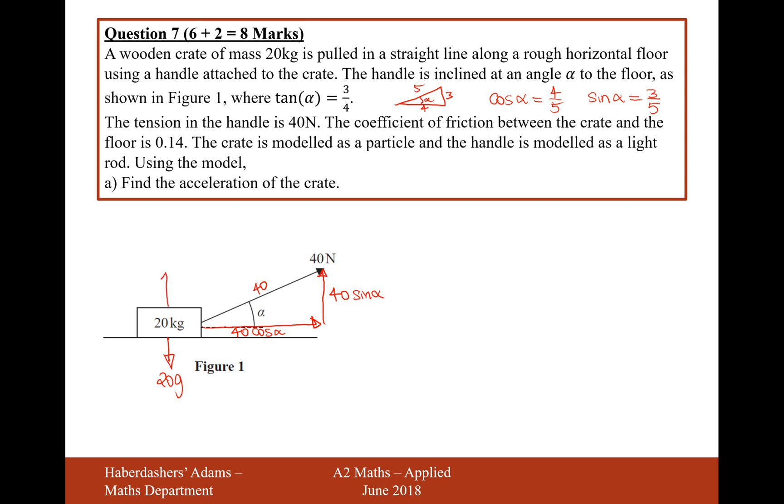And then remember that cos α and sin α are these values up here, so we'll use that later on. Now the value of R, the reaction force between the ground and the particle, is going to be positioned here. But if we look at the total upwards forces and the total downwards force, we can see that when we resolve our forces upwards and downwards, we're going to get R plus 40 sin α equals 20g.